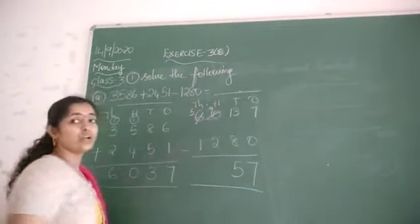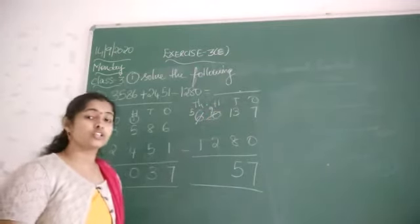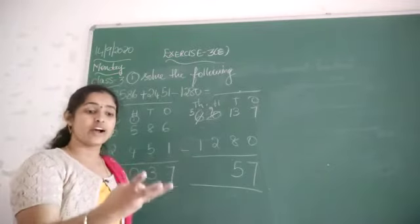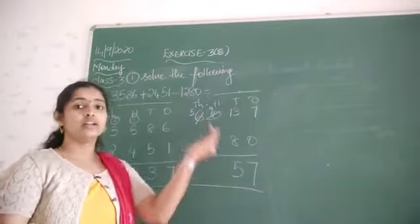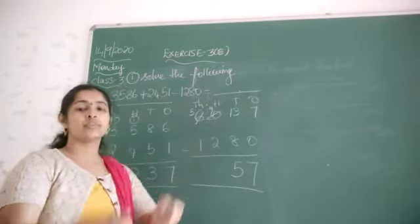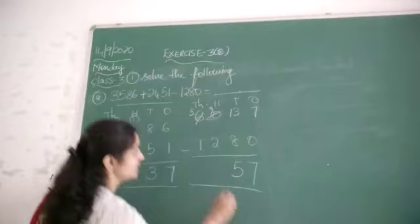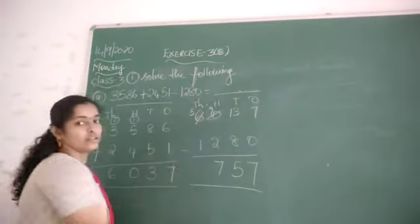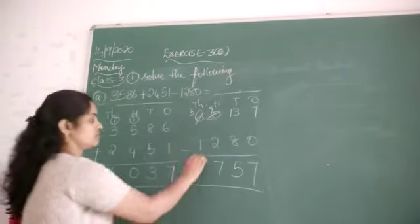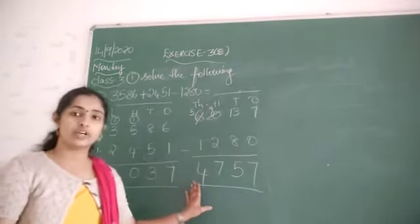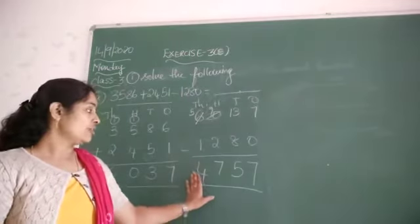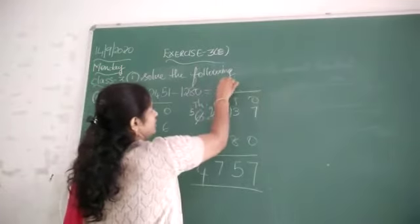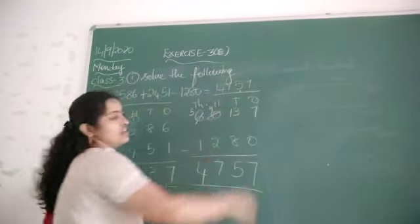Next: nine minus two. Nine minus two is how much? Two, three, four, five, six, seven, eight, nine — that is seven. Next: five minus one. Five minus one is four. So this is the required answer — four thousand seven hundred and fifty seven.